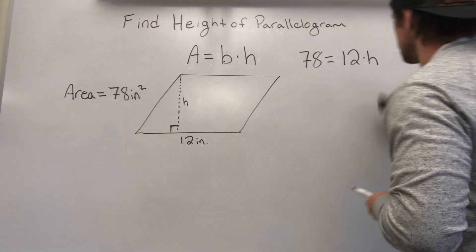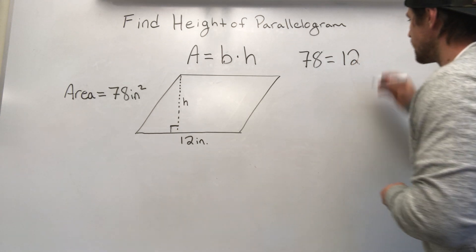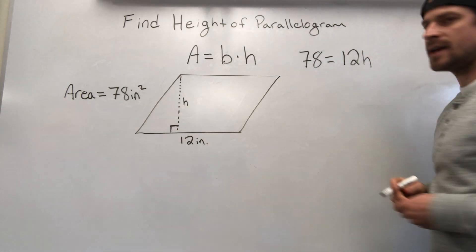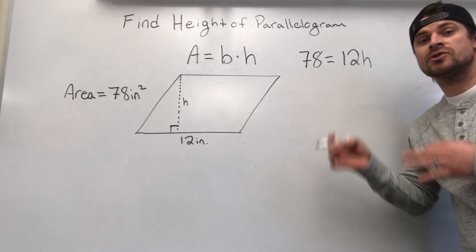We call the 12 a coefficient. So I'm going to rewrite that so you guys can see what it's going to look like in your classrooms and in your textbooks. It would look just like that. 12h, which means 12 times h.